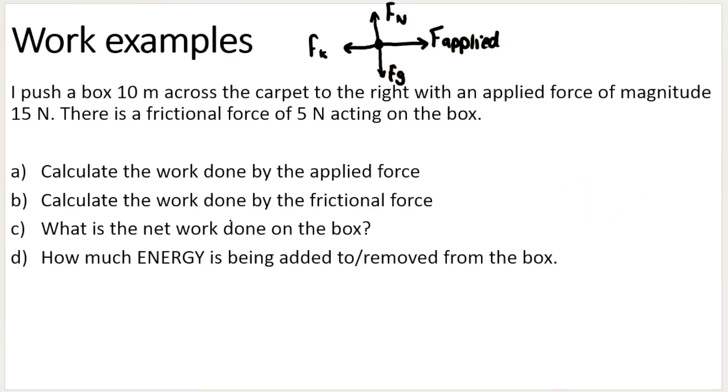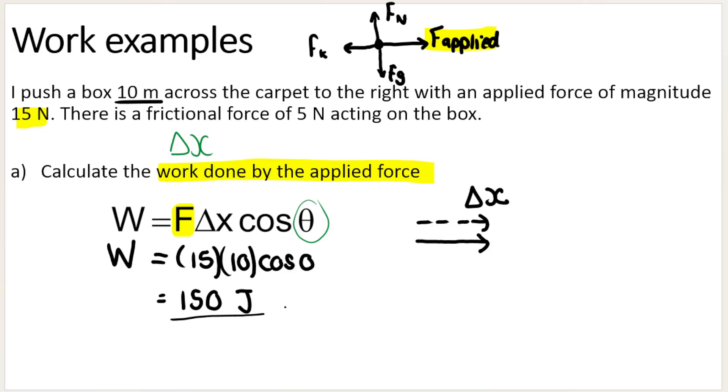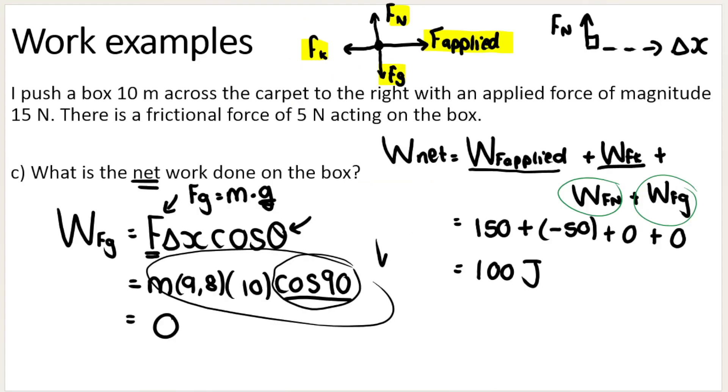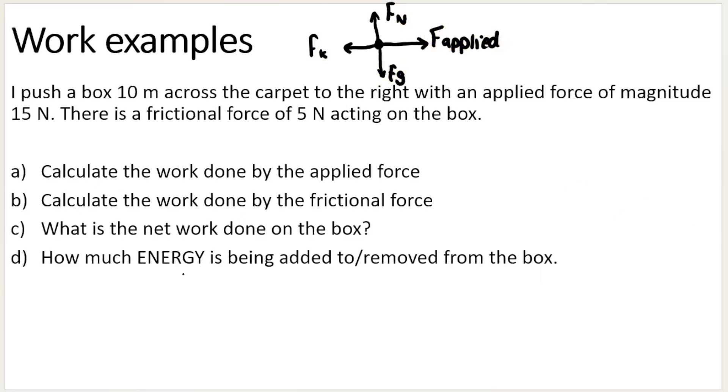And last but not least, how much energy is being added to or removed from the box? Well, remember, according to our calculations, 150 joules of energy is being added because it's a positive. And here, 50 joules is being removed. So therefore, overall, the net work, W net, the net work will tell me the net amount of energy added or removed. It's a positive, so overall there is 100 joules of energy that is being added.